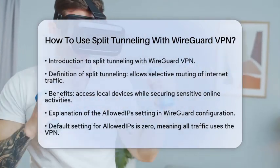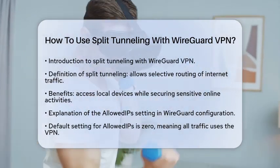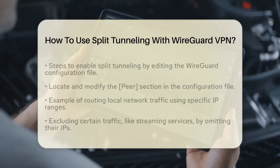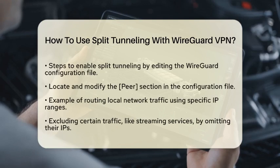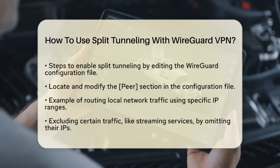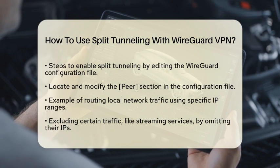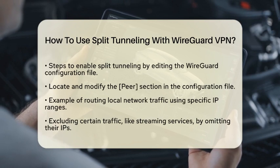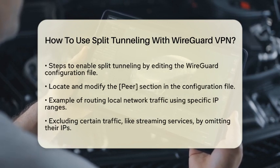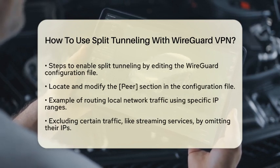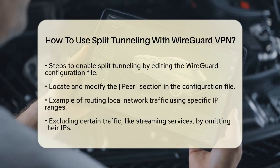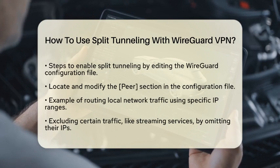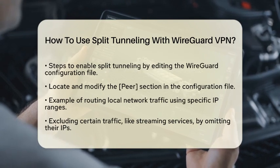To enable Split Tunneling, you will need to adjust this setting. Now, let's get into the configuration steps. First, you will need to edit the WireGuard configuration file. This file is often named wg0.conf and can be opened in a simple text editor.